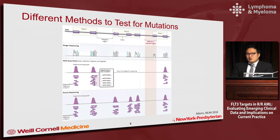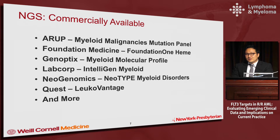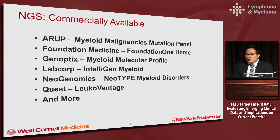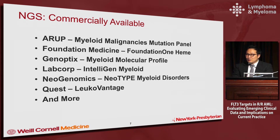Next-generation sequencing is commercially available. There's a short list of different commercial laboratories that offer myeloid-directed NGS, including ARUP, Foundation Medicine, Genoptix, LabCorp, NeoGenomics, Quest, and others. In academic settings we do it in-house, but this testing can be done commercially. One thing to note is that increasingly, insurances are putting restrictions on these tests, and insurance may dictate which commercial laboratory you need to send the testing to, depending on the patient's insurance.